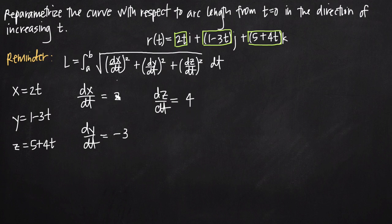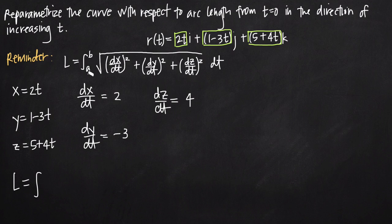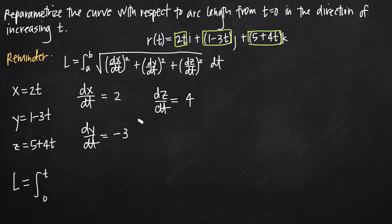Now we plug these values into the arc length formula. The tricky part is handling the limits of integration a and b. Normally if we were finding arc length on an interval, say 0 to 1, we'd just plug those in. But here all we know is that we're reparametrizing from t equals 0 in the direction of increasing t. So t equals 0 is our lower limit, and positive t is our upper limit. If we were going from t equals 1 in the direction of decreasing t, our limits would be 1 and negative t instead.